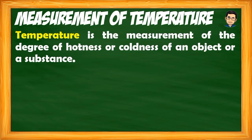Temperature is the measurement of the degree of hotness or coldness of an object or a substance. It measures how hot or cold something is in a place. For example, in a room, it measures how warm or cold it is there. And when we boil water, we look at how hot the water is.